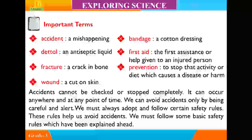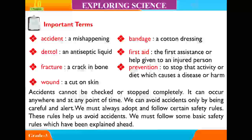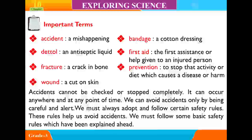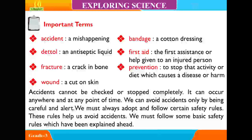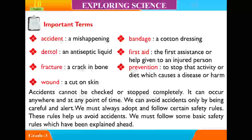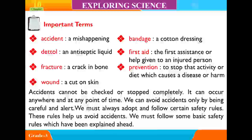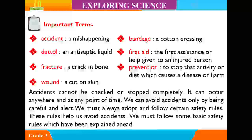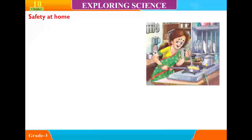Accidents cannot be checked or stopped completely. They can occur anywhere and at any point of time. We can avoid accidents only by being careful and alert. We must always adopt and follow certain safety rules. These rules help us avoid accidents. We must follow some basic safety rules which have been explained ahead.